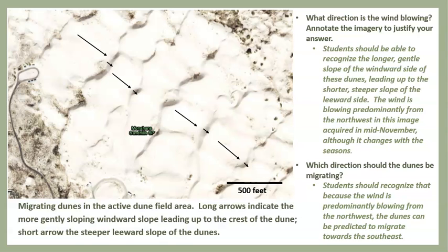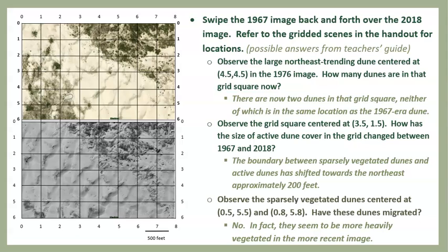Activities in this unit require students to interpret and annotate the imagery to determine the wind direction that created the dune forms and the direction of dune movement in the active dune field. The exercise uses selected views to highlight dune migration and dune stabilization using a gridded worksheet. Students are introduced to the use of geographic coordinates and map scales, and they identify areas where vegetation cover and dune configuration have changed over time.